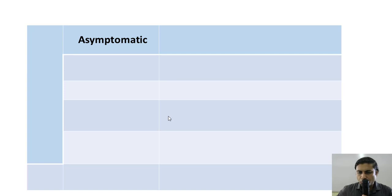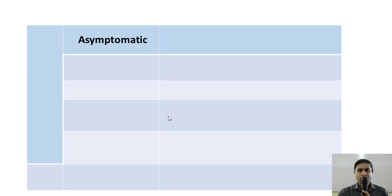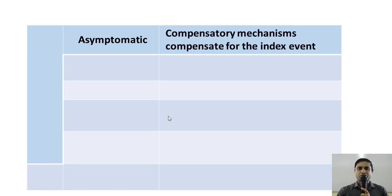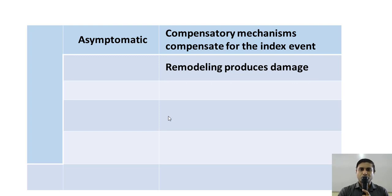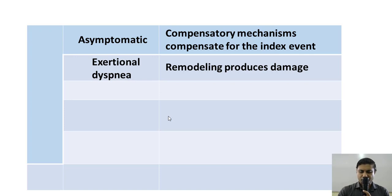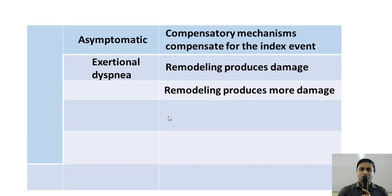Soon after the index event, the patient recovers and is more or less asymptomatic, because the compensatory mechanisms fully compensate for the damage that has occurred. But as the process of remodeling progresses, the patient begins to develop symptoms. Initially the patient suffers only from exertional dyspnea, which is often missed. As the remodeling process produces more and more damage, the patient starts developing very characteristic patterns of dyspnea, one of which is orthopnea.